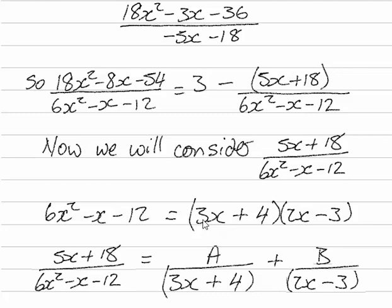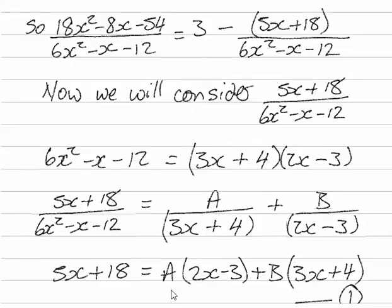Which means that we can write that 5x plus 18 over 6x squared minus x minus 12 is equal to A over 3x plus 4 plus B over 2x minus 3. We put the right hand side over a common denominator and then we can cancel the denominators on both sides which means that 5x plus 18 is equal to A times 2x minus 3 plus B times 3x plus 4.